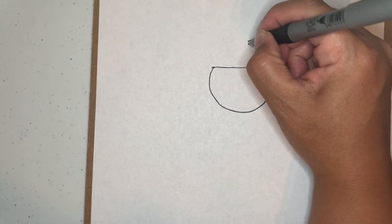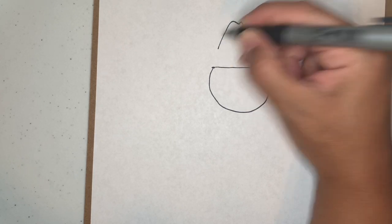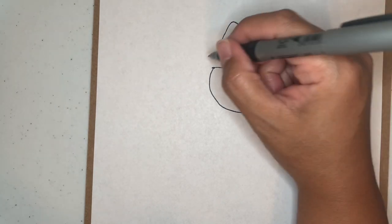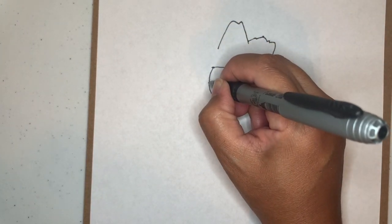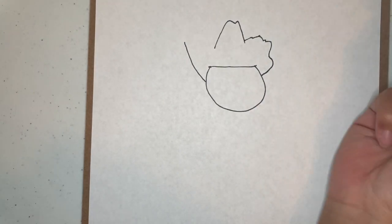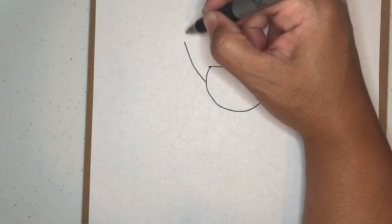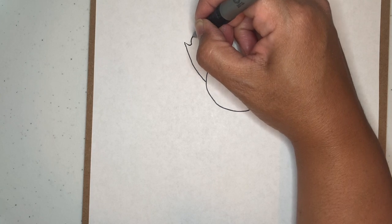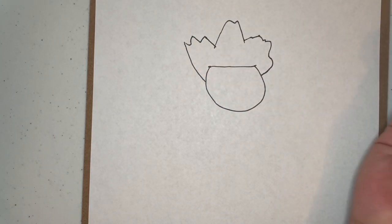And then, almost like an M, over here, almost like a cowboy hat. And then over here, same thing. So come up to about there, and then you're just going to do a jagged line right there for your cowboy hat.